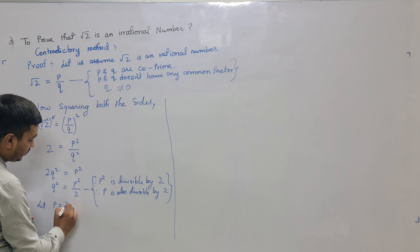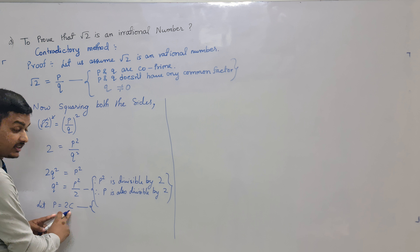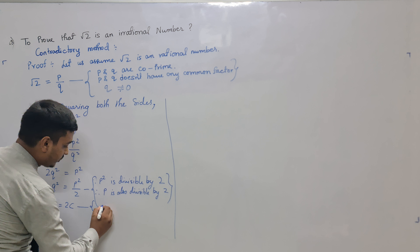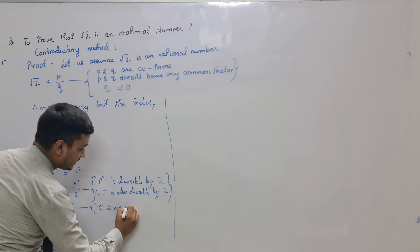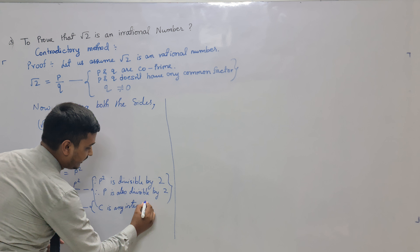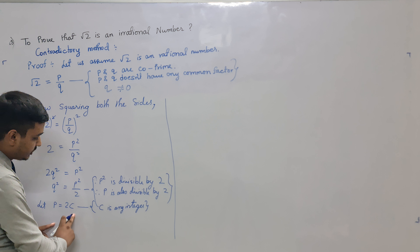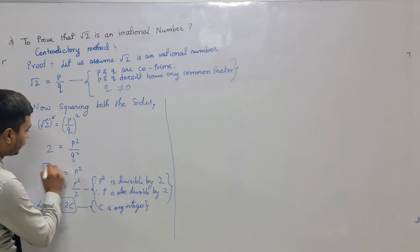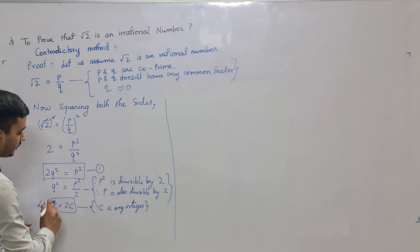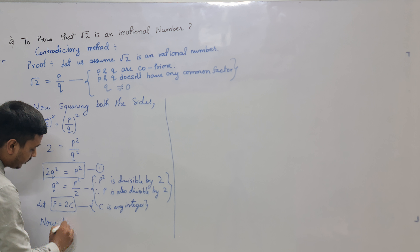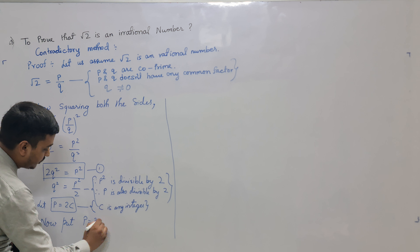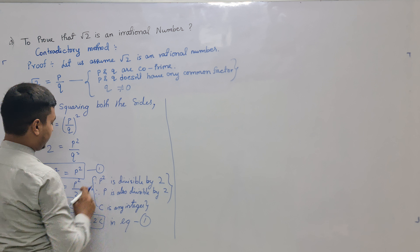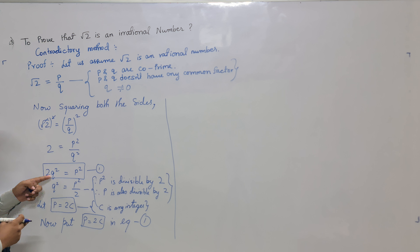By this condition, we can write P is equal to 2C, where C is some integer. This means P is divisible by 2, so I can write P in the form of 2 multiplied by any integer C. Let us make 2Q square equals P square as equation 1. Now put P equal to 2C into equation 1.